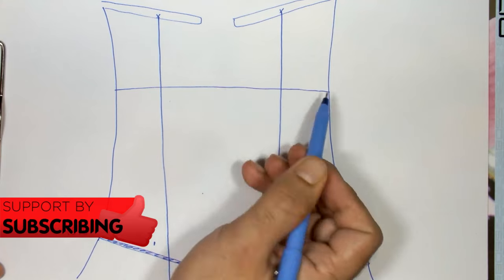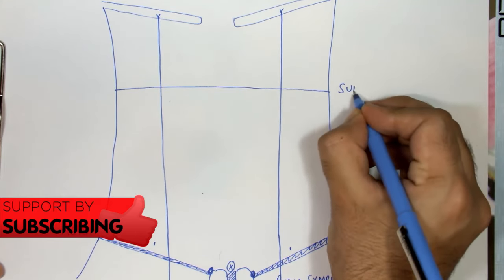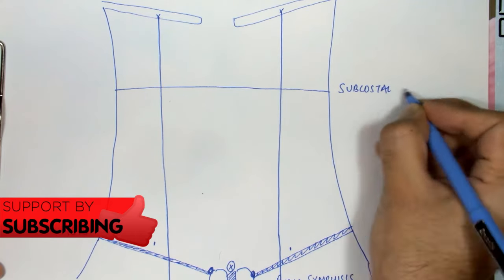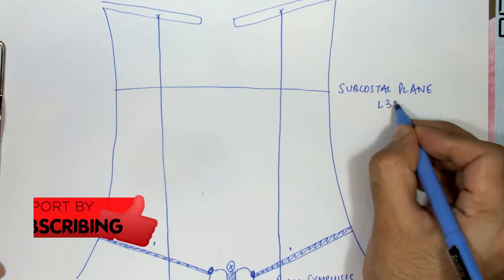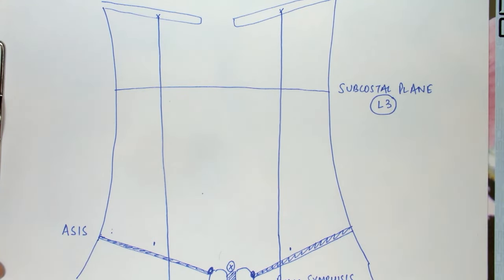The first horizontal line is the subcostal plane. This plane passes through the lower most part of the ribcage, which corresponds to the 10th costal cartilage, and posteriorly it corresponds to the third lumbar vertebra, or L3.